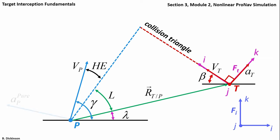It could be that the target accelerates or that there's a heading error in the pursuer, so we need some acceleration correction. Pure proportional navigation was one option — it's perpendicular to VP. You can attach a frame to the pursuer to describe pure pronav. And then there was true pronav, which is perpendicular to the range vector. If needed, we could also attach a coordinate system to describe it with the kinematics.